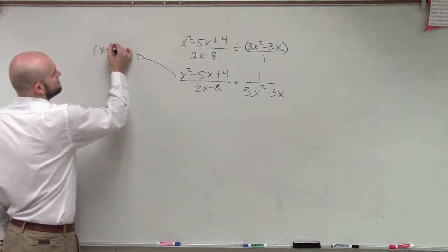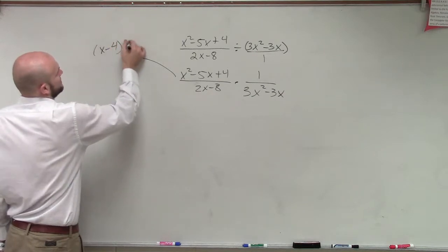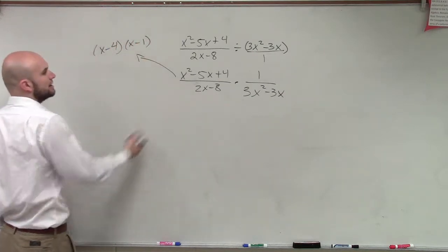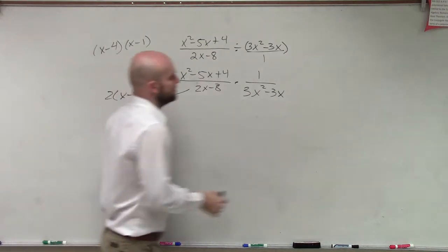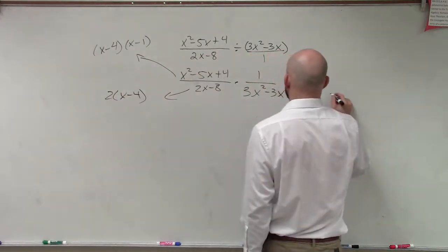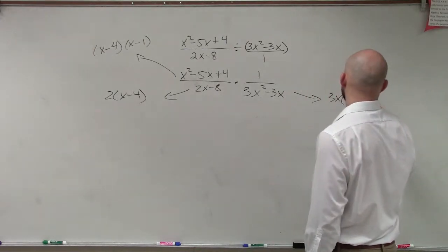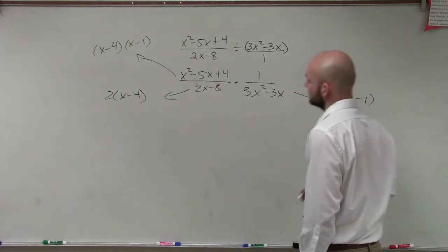Yeah, we can rewrite that as x minus 4 times x minus 1, right? We can factor this, factor out of 2. And then here we can factor out of 3x, right?